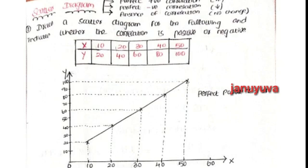Once you plot all the points, you can draw a straight line through them. If the line goes upward, that is positive correlation. If the line goes downward — that is the reverse side, decreasing side — that is perfect negative correlation. If there are no changes and the points do not meet at one line, that is absence of correlation. This scatter diagram is mostly a Part A, 2-mark question.